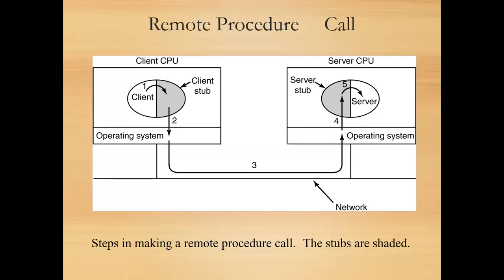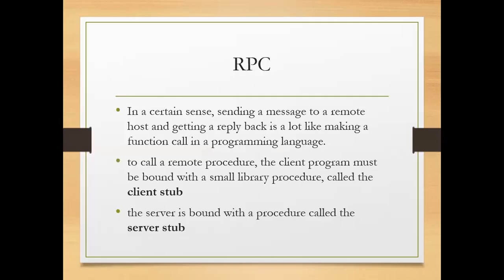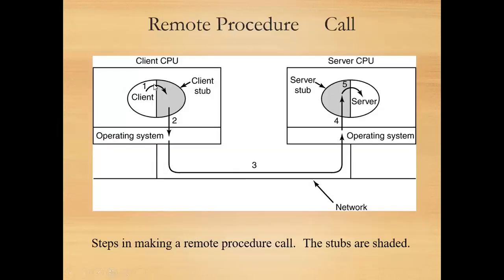You can see in the diagram. To call a remote procedure, the client program must be bound with a small library procedure called the client stub. So on the side of the client there is a client stub, and the server program is bounded with a server stub. The first step is: client communicates with the client stub. The client stub is marshaling the parameters, and then the operating system on the client side communicates with the server side.